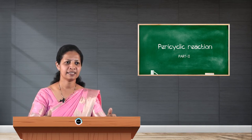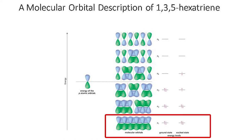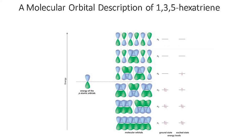Next, let us look at 1,3,5-hexatriene. In 1,3,5-hexatriene there are 6 carbon atoms. The linear combination of 6 isolated p orbitals gives 6 molecular orbitals: psi 1, psi 2, psi 3, psi 4, psi 5, and psi 6. In psi 1 there are no nodes because all interactions are bonding, whereas in psi 6 all interactions are anti-bonding, giving 5 nodes. All these molecular orbitals are arranged in increasing order of energy.